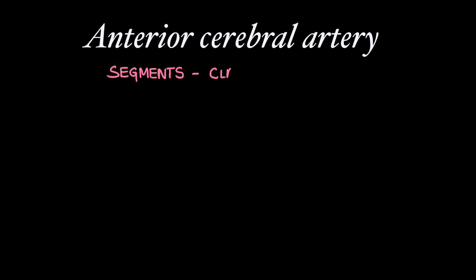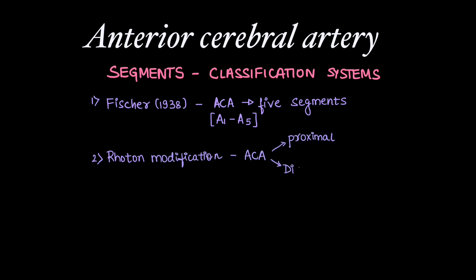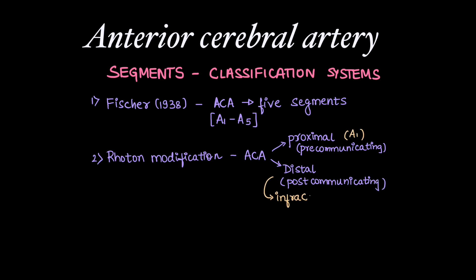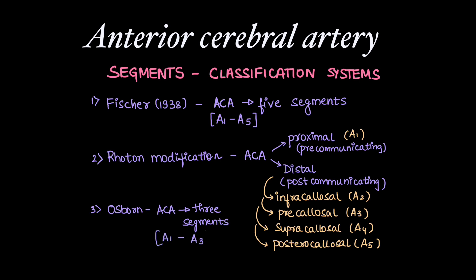Anterior cerebral artery segments have been classified into various classification systems by various authors. Fisher in 1938 classified ACA into 5 segments, A1 to A5. Yasargil and Rhoton modified the same system to divide ACA into proximal and distal segments. The proximal segment is called the pre-communicating segment and the distal segment is called the post-communicating segment. Proximally is A1; distally it is further divided into infracallosal A2, pre-callosal or A3, supra-callosal or A4, and posterior callosal or A5 segments. Osborne divides ACA into the classic three segments, A1 to A3.